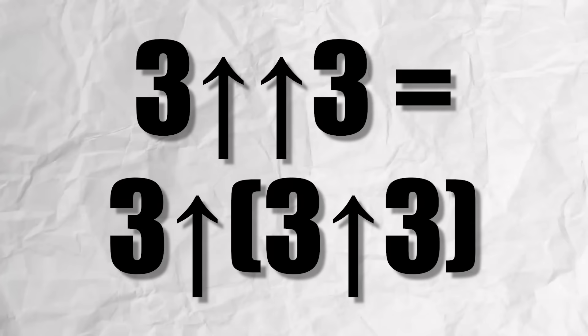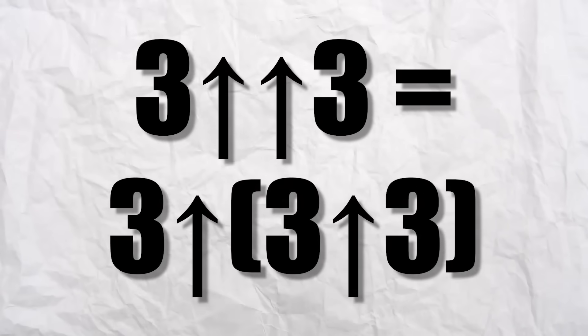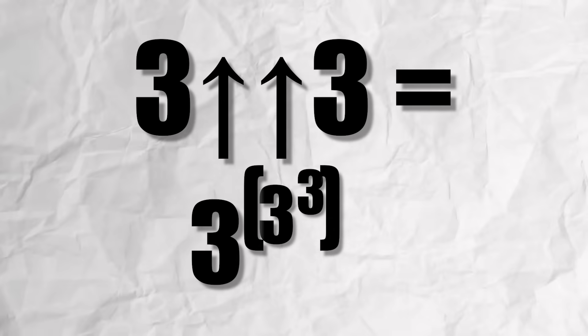Extending this, we now get that 3 double arrow 3 is 3 arrow 3 arrow 3, or 3 to the power of 3 to the power of 3.